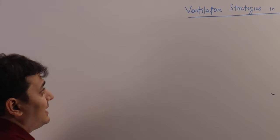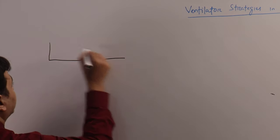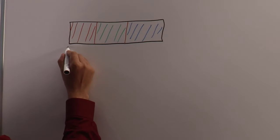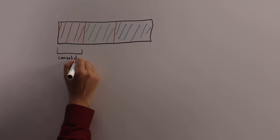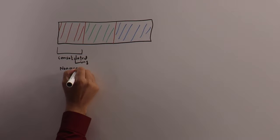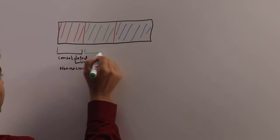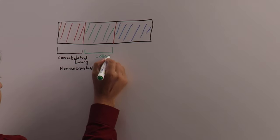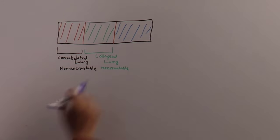Before discussing the ventilator strategy, let us clear some basic concepts. The ARDS lung actually consists of three parts. We have the consolidated lung, which is non-recruitable — the lung which has consolidated cannot be recruited. Then we have the collapsed lung, which is recruitable. And at the end, we have what we call normal lung.